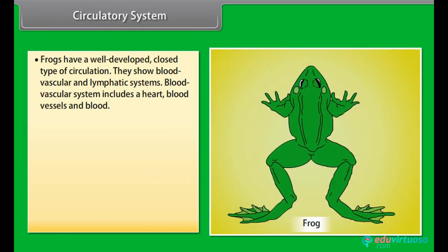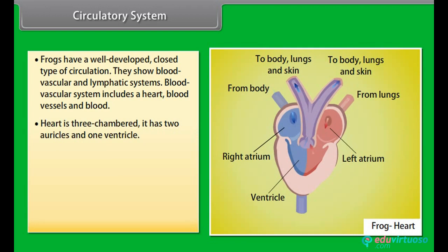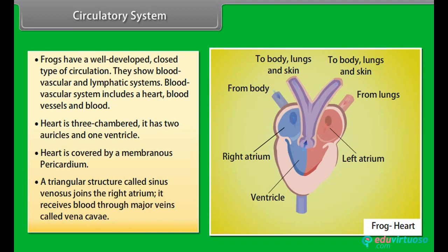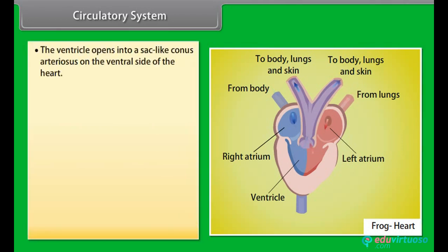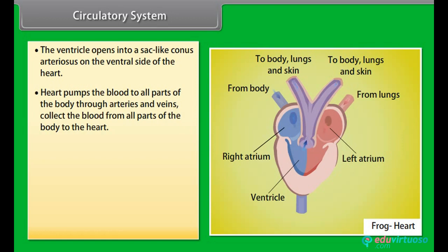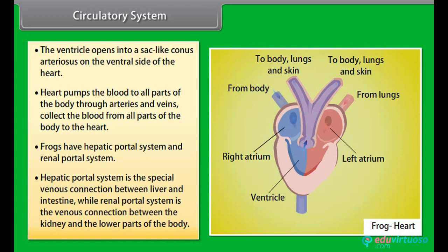Frogs have a well-developed closed type of circulation. They show a blood vascular and lymphatic system. The blood vascular system includes a heart, blood vessels and blood. The heart is three-chambered with two auricles and one ventricle, covered by a membranous pericardium. A triangular structure called the sinus venosus joins the right atrium and receives blood through major veins called vena cava. The ventricle opens into a sac-like conus arteriosus on the ventral side of the heart. Frogs have a hepatic portal system and a renal portal system.